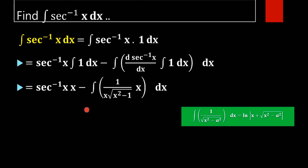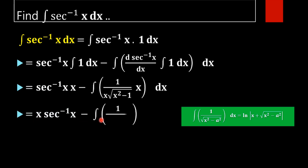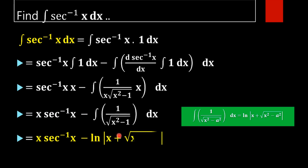Now this x and this x will cancel each other. What will remain is: x sec inverse x minus integral of 1 by square root of x squared minus 1 dx. And the integral of 1 by square root of x squared minus 1 dx equals log mod x plus square root of x squared minus 1, plus C.